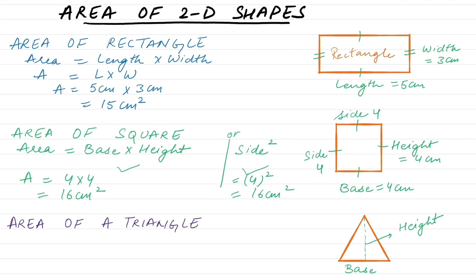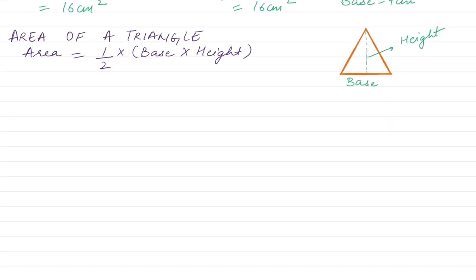The area formula for a triangle is the same for every single triangle — whether it's scalene, isosceles, or any other type. The formula is: area is equal to half times base times height. Basically, you multiply base and height and divide by 2. Suppose the base is 4 cm and the height is 6 cm. We need to multiply these two and divide by 2: half times 4 times 6.